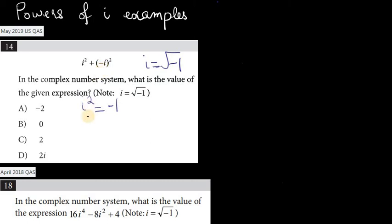And for the second one, for negative i squared, well I can just write this as the product of negative 1 squared times i squared. I just used my exponent properties here.